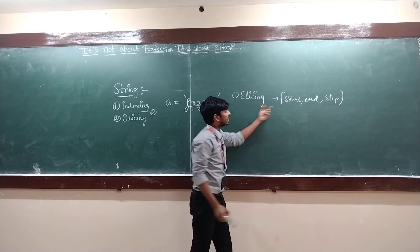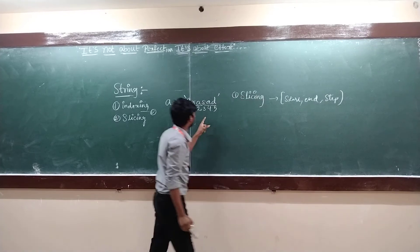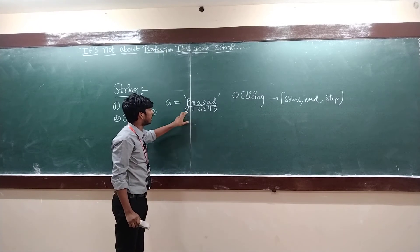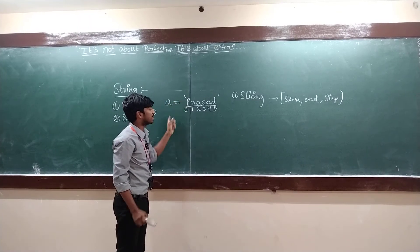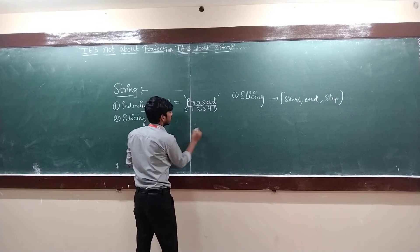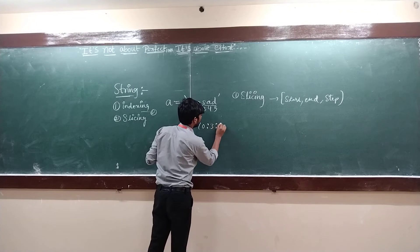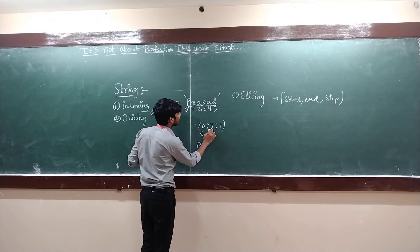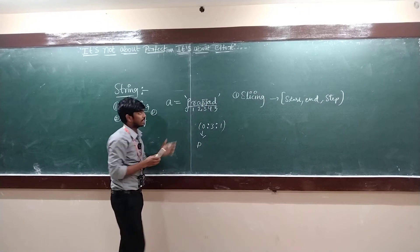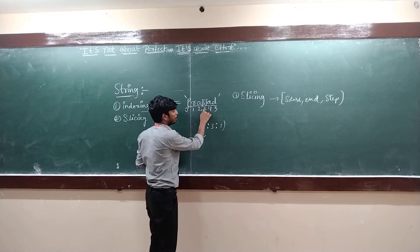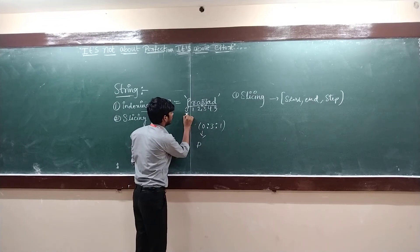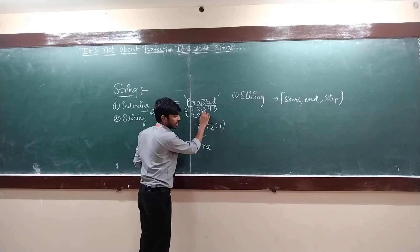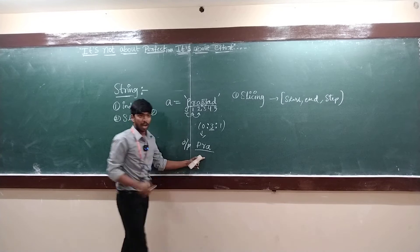Start is the first index number where you begin, end is the last index number in the string, and step is the interval. For example, step 2 means it will print the character at index 0 and then skip 2 characters. When you take 0:3:1 — starting index is 0, so it prints P. The ending index is 3, so the character at index 3 will not be printed. With step 1, after P it goes to R, then A. So the output from Prasad using 0:3:1 is PRA.